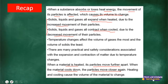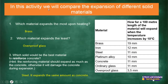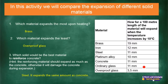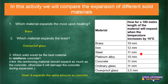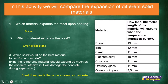In this activity we're going to compare the expansion of different solid materials. We have brass, iron, steel, platinum alloy, concrete, ordinary glass, and ovenproof glass. For every 100-metre length of material, the temperature was increased by 10 degrees Celsius. Brass expanded 19 mm, iron 12 mm, steel 11 mm, platinum alloy 10 mm, concrete 11 mm, ordinary glass 11 mm, and ovenproof glass 3.5 mm.